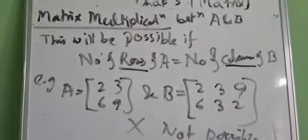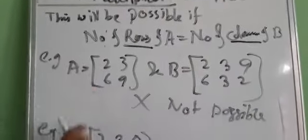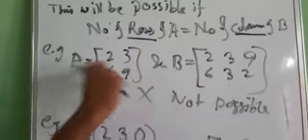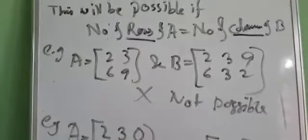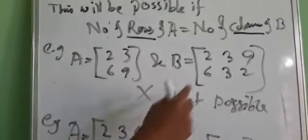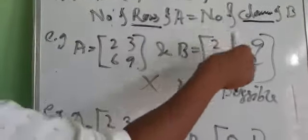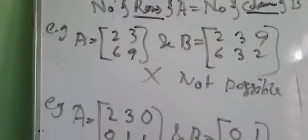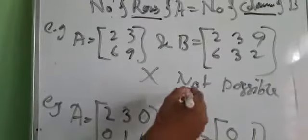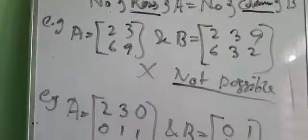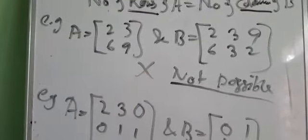For example, in this case, for matrix A, the number of rows is 2. And for matrix B, the number of columns is 3. So in this case, matrix multiplication will not be possible.